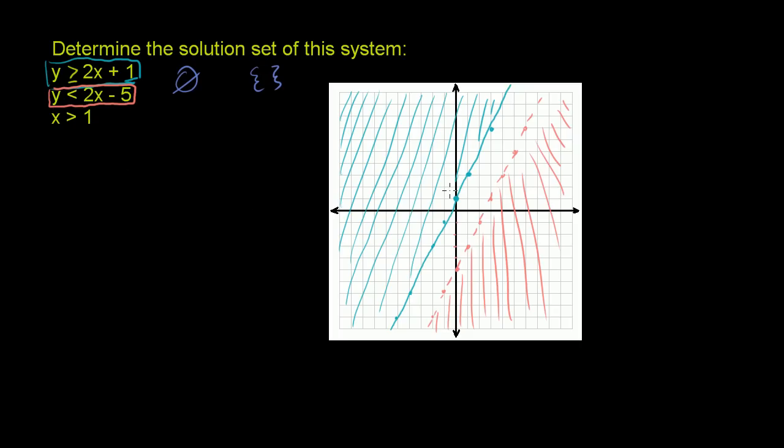I mean, we could do the x is greater than 1. This is x equals 1, so we put a dotted line there for x's, because we don't want to include that. So it would be all of this stuff. But once again, there's nothing that satisfies all three of these. This area right here satisfies the bottom two. This area up here satisfies the last one and the first one. But there's nothing that satisfies both these top two. Empty set.